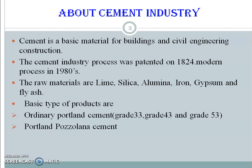About cement industry: cement is a basic material for buildings and civil engineering construction. The cement industry process was patterned in year 1824, with the modern process developed in the 1980s. The raw materials are lime, silica, alumina, iron, gypsum, and flyash. The basic types of products are Ordinary Portland Cement and Portland Pozzolana Cement, further classified into Grade 33, Grade 43, and Grade 53.